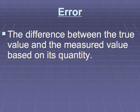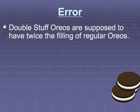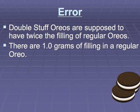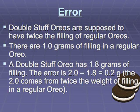Error is the difference between the true value and the measured value. This is a pretty easy idea. Let's suppose that you're looking at double stuffed Oreos — they're supposed to be twice the filling of regular Oreos. There is one gram of filling in a regular Oreo, which means you should have two grams of filling in a double stuffed. If your double stuffed Oreo only has 1.8 grams of filling, then there's a difference of two tenths of a gram. That's the error.